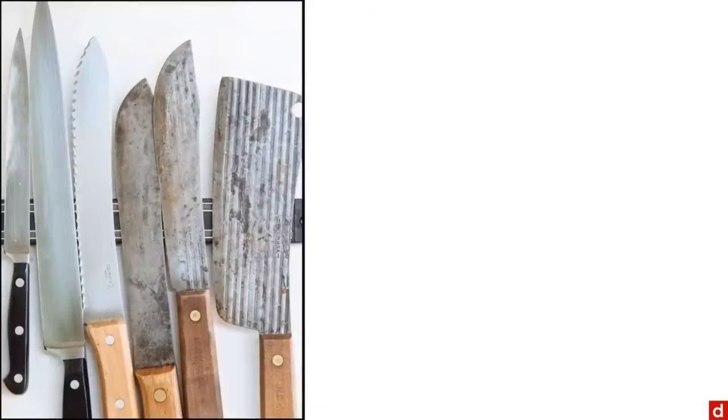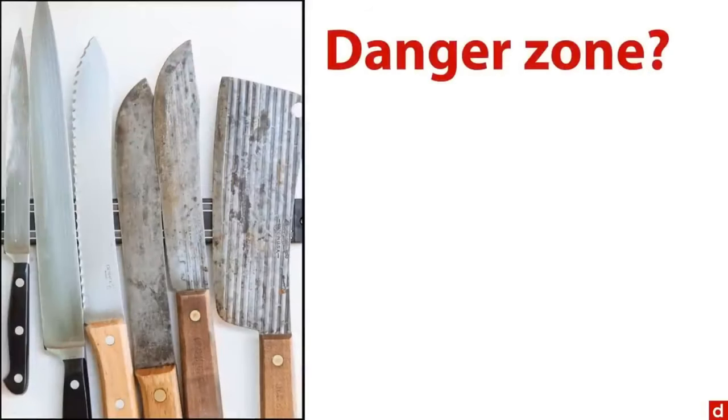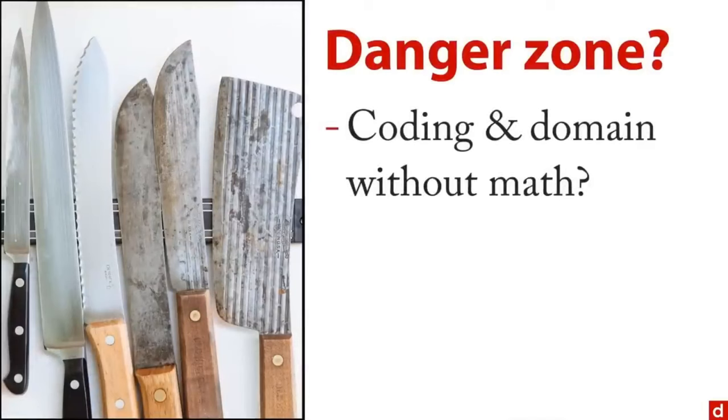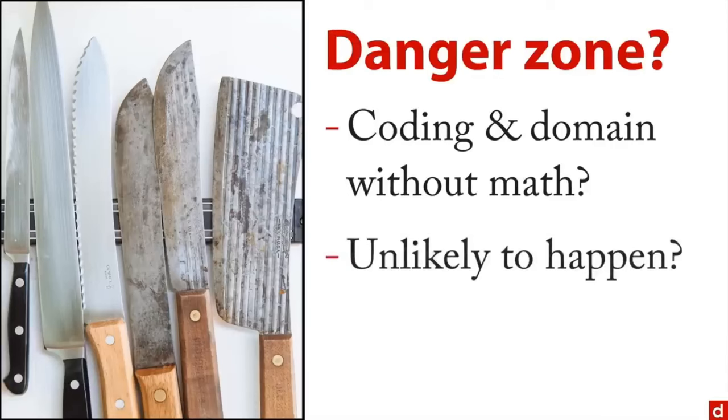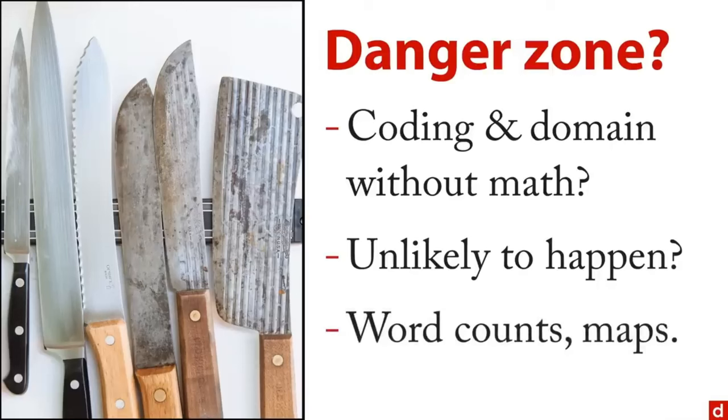And then finally, there's what Conway called the danger zone. That's the intersection of coding and domain knowledge, but without math or statistics. He says it's unlikely to happen, and that's probably true. On the other hand, I can think of some common examples, what are called word counts, where you take a large document or series of documents, and you count how often each word appears. That can actually tell you some important things. And also, drawing maps and showing how things change across place and maybe across time. You don't necessarily have to have the math, but it can be very insightful and helpful.